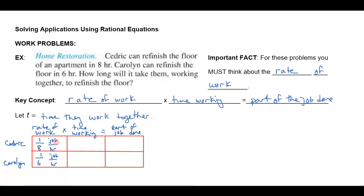If they work for two hours together, Cedric would do two-eighths (a quarter) of the job and Carolyn two-sixths (a third), so a quarter and a third — that's more than half the job done after two hours. In three hours Cedric will have done three-eighths (almost half) and Carolyn three-sixths (half), so in three hours they're almost done. In four hours Cedric would have done four-eighths (half) and Carolyn four-sixths (two-thirds), so certainly in four hours they're done.